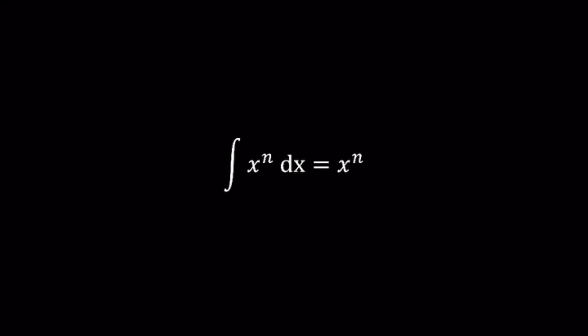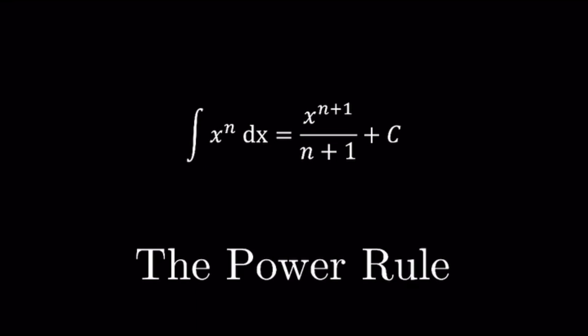The process is simple. First, add 1 to the power of x. Second, divide by the new power. Third, don't forget to add a constant, which we'll call c.